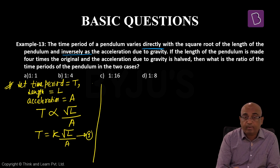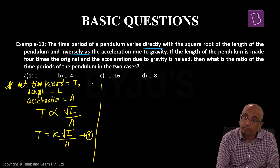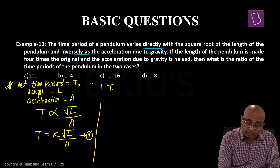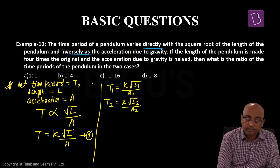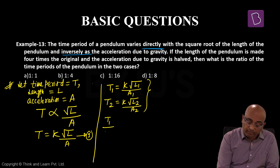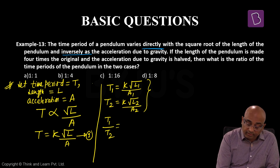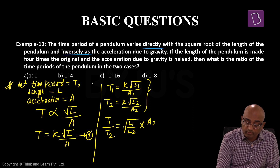इस equation को equation 1 में लिखेंगे: T1 is equal to K into square root of L1 divided by A1, और उसी तरह से T2 is equal to K into square root of L2 upon A2। K constant है, अब इन दोनों equations को आपस में divide करो। So T1 by T2 is equal to square root of L1 upon L2 into A2 upon A1।